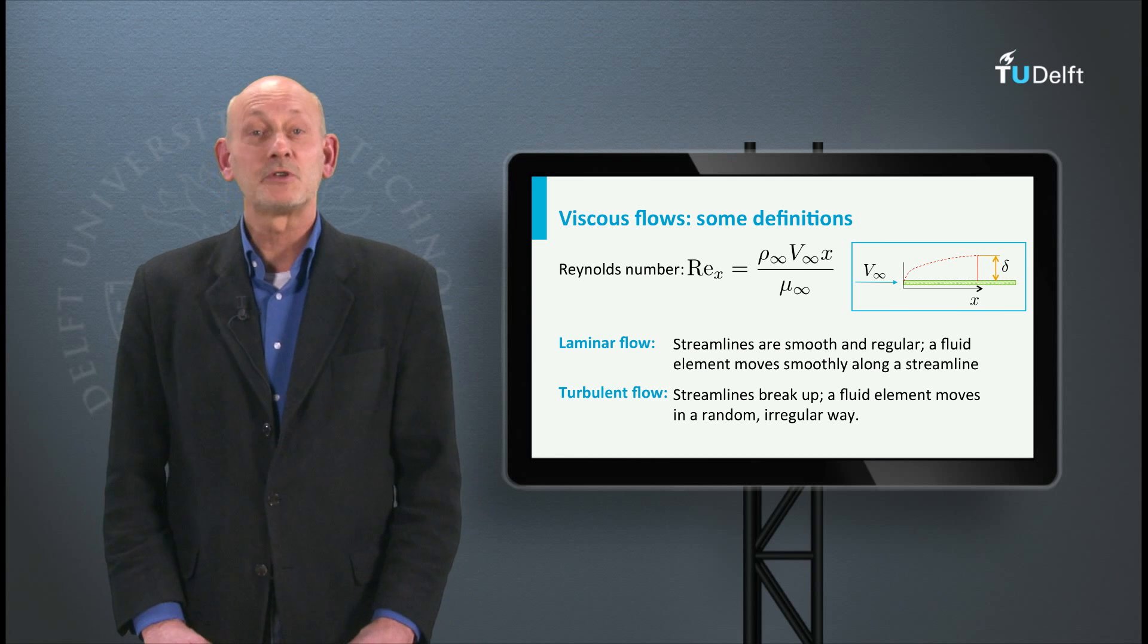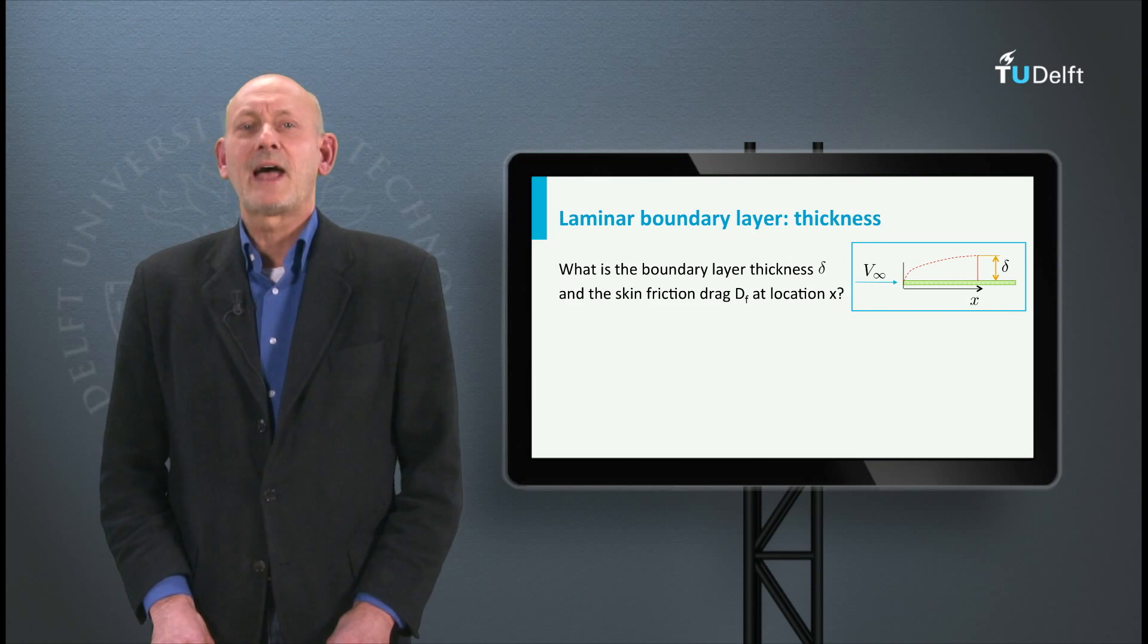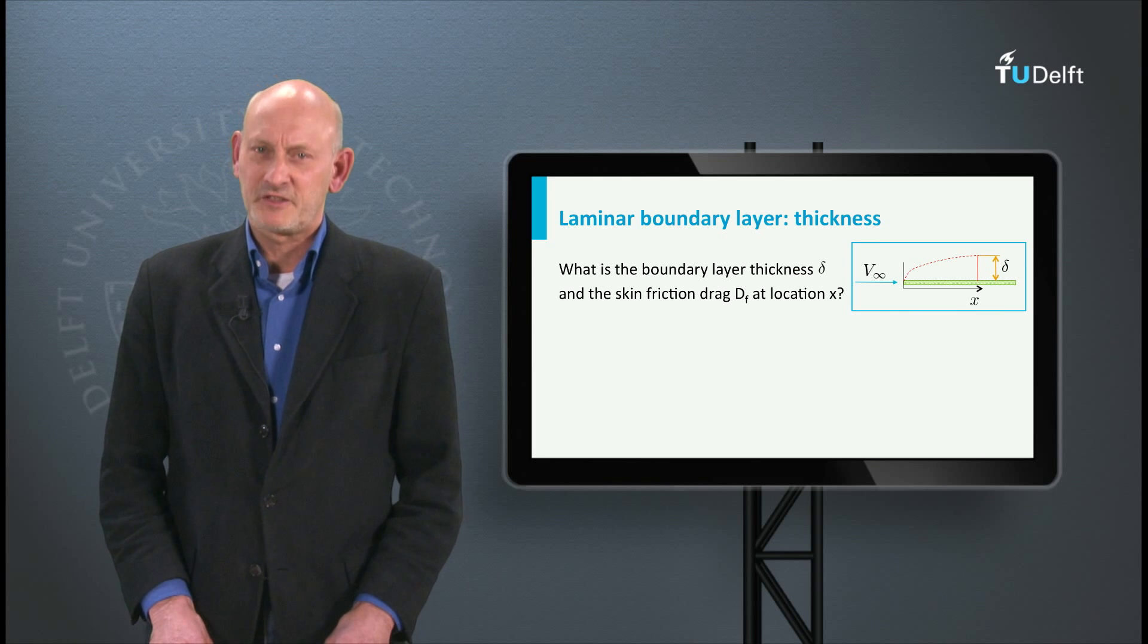The transition process from laminar to turbulent flow is a complicated mechanism of growing disturbances in the flow. We will talk about that later. First of all, let us look at the development of the boundary layer thickness along the plate.